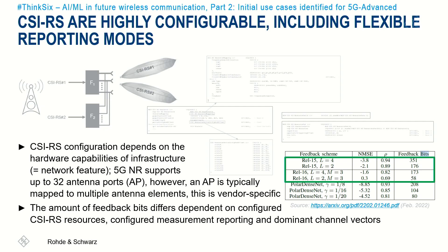The table here, copied from a paper published by Samsung, shows and compares the amount of feedback bits based on certain configurations and different 3GPP releases. We can see that this ranges from 351 bits to 58 bits. The second part of the table shows the number of bits required to transmit the same information after being compressed by an autoencoder — an unsupervised artificial neural network that learns how to efficiently compress and encode data, then reconstruct it back to a representation as close to the original input as possible.